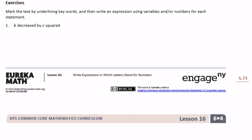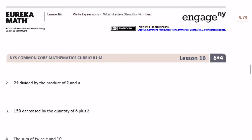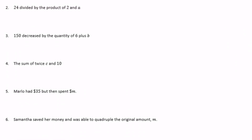Exercises: mark the text by underlining keywords, then write an expression. Number 1: b decreased by c squared — 'decreased by' means subtract, 'squared' is an exponent — so b minus c squared. Number 2: 24 divided by the product of two and a — the product of 2 and a is 2a, so 24 divided by 2a, or 24 over 2a.